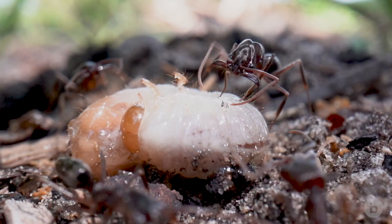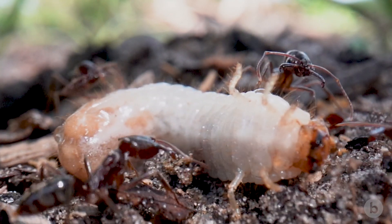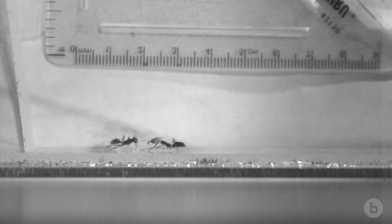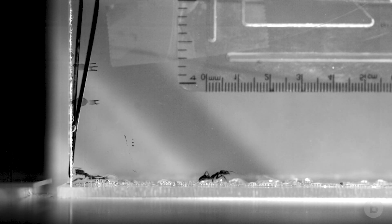Trap jaw ants are ants that use their jaws for capturing prey, for fighting other ants, launching themselves in the air, literally jumping with their jaws. Jumping with jaws is not a normal thing in biology, that is for sure.